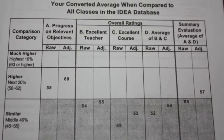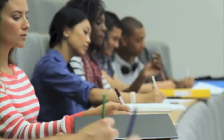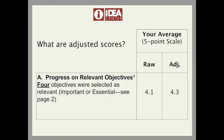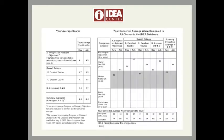When you teach a class, you know there can be factors outside your control that can impact the learning experience for your students. The IDEA system uses a statistical technique to exclude the effect of variables that are likely to impact your scores, but which are outside your control. That's why you have two types of scores in your IDEA report: the simple average, or the raw score, and the adjusted score.